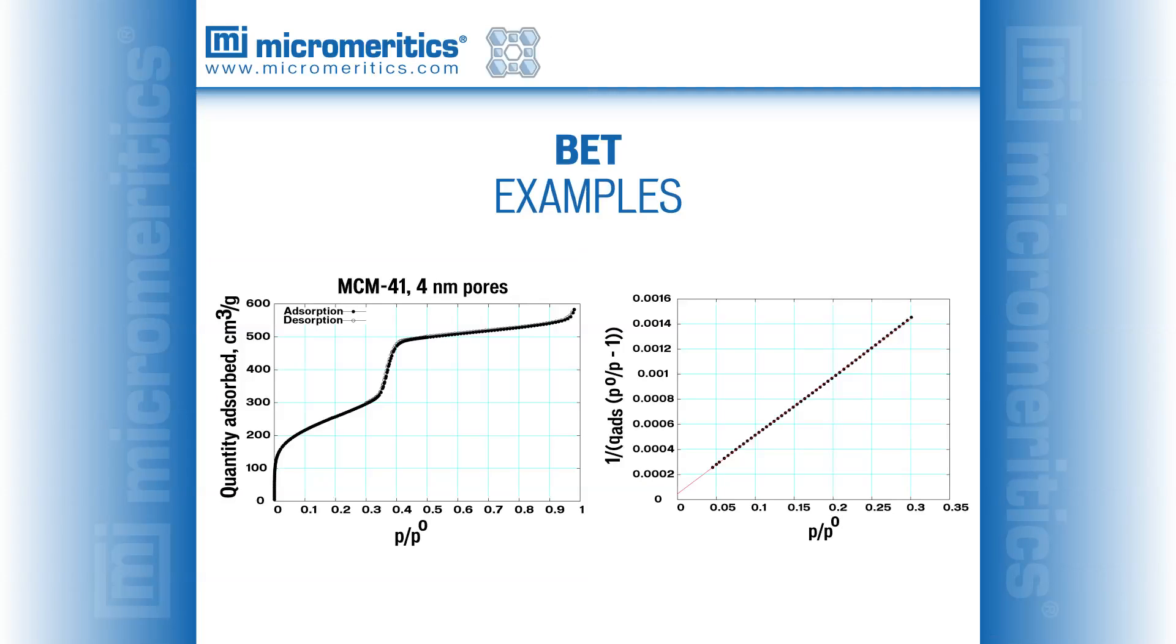This final BET example gives the isotherm and BET surface area of MCM41. MCM41 is a synthetic mesoporous silica with 4 nm pores. Its structure is similar to a bundle of drinking straws, and it has a BET surface area greater than 900 m squared per gram.